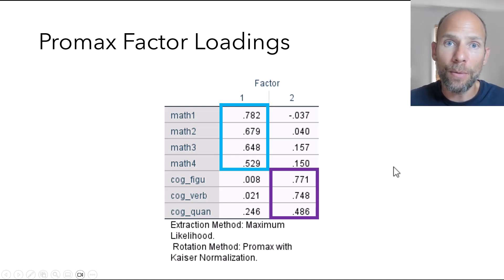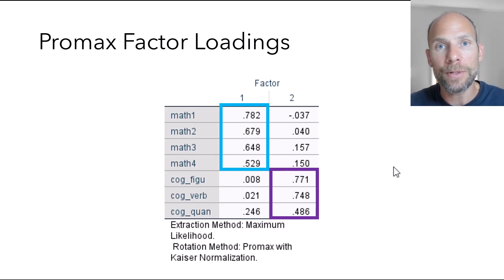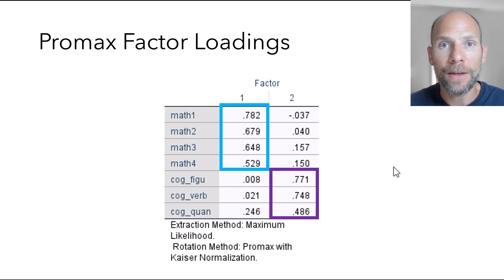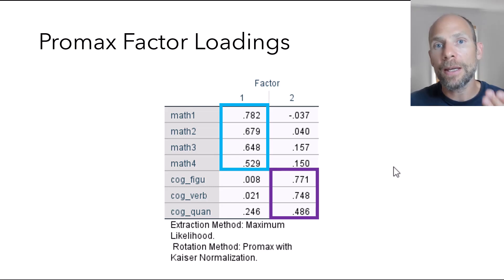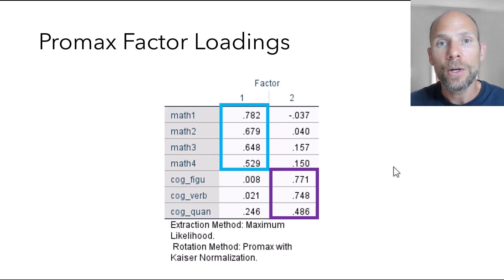The ProMax oblique rotation led to a much better simple structure because it allows the factors to be correlated. In this case, math ability and cognitive ability are substantially correlated. When we allow that, we can achieve a much better simple structure in our factor loading matrix, which makes it easier to interpret the factors and gives a more realistic solution.